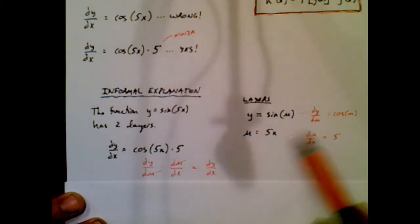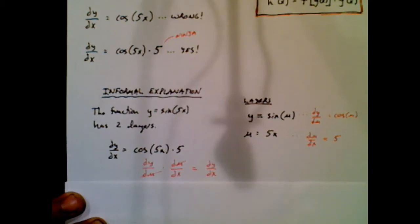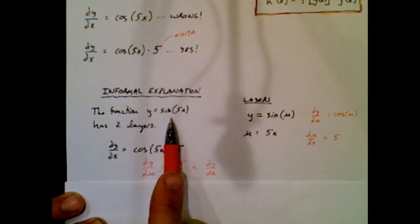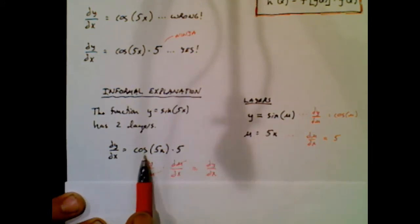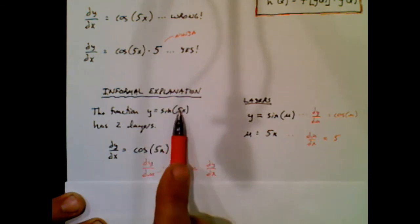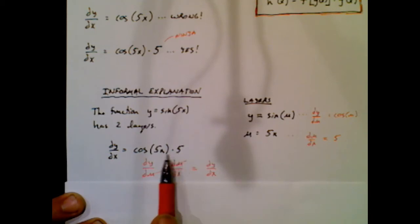So that might have been too much information for you. If it is too much information, just go by this. Look at the function. Does it have layers like one function living inside the other? If it does, write them down or put them firmly in your brain. And your derivative is the derivative of the first layer times the derivative of the inner layer. That is called the chain rule, because you're adding another chain or another link in the chain that is the derivative.